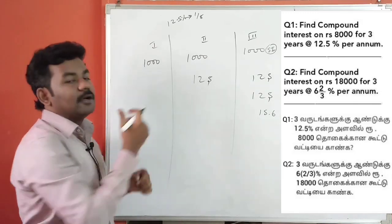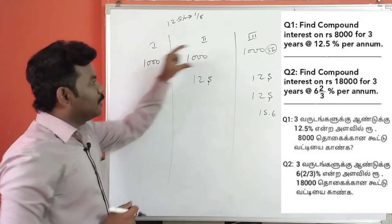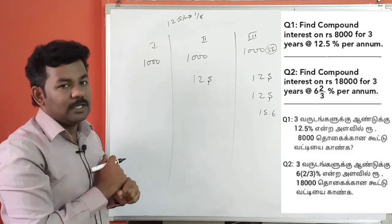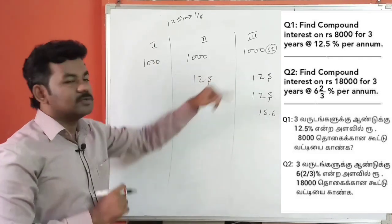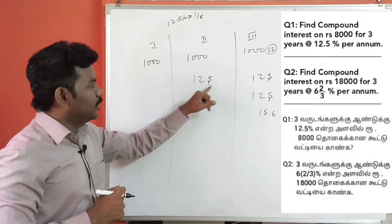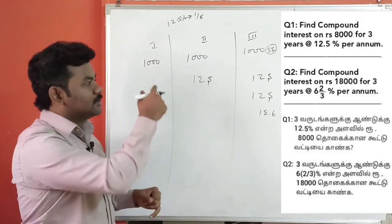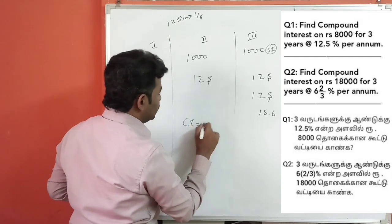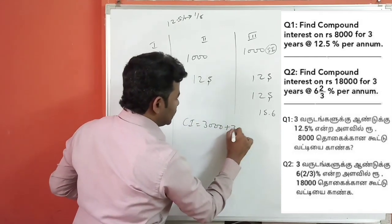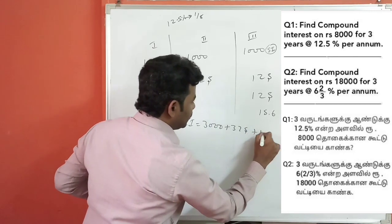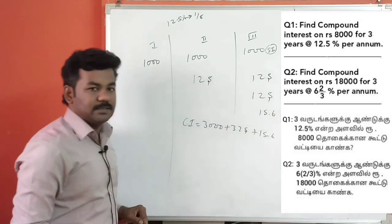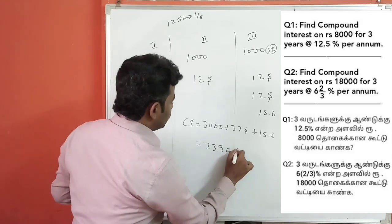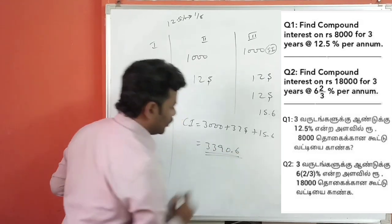So what is the compound interest? Now we add all the interest totals. We add 1,000 plus 1,000 plus 1,000 to get 3,000. Then 125 plus 125 plus 125 equals 375. So the compound interest equals 3,000 plus 375 plus 15.6, which gives 3,390.6.